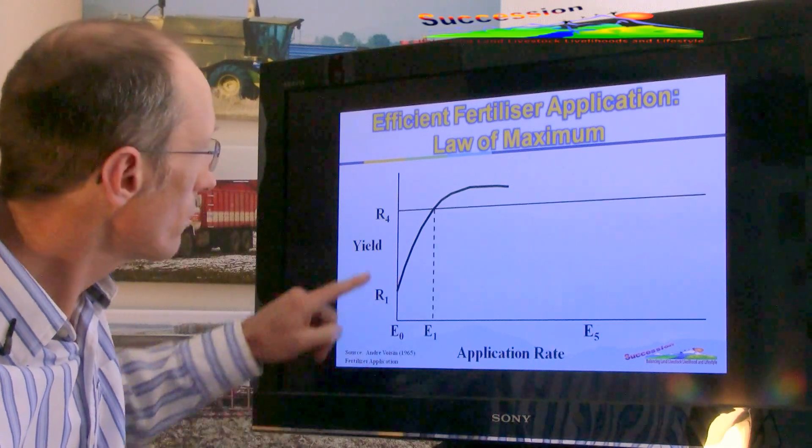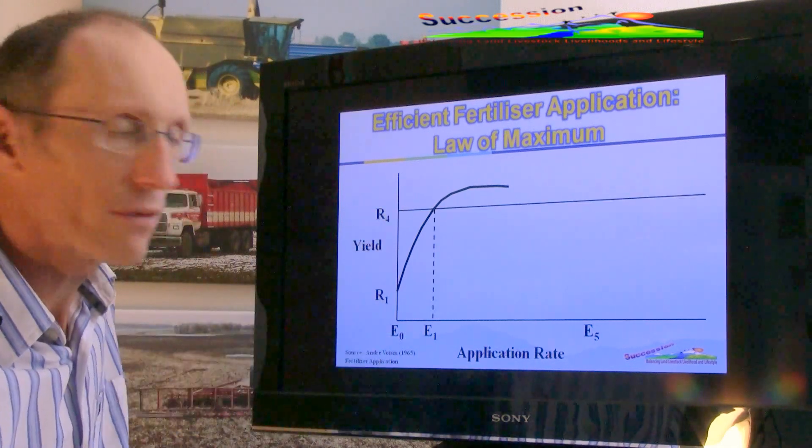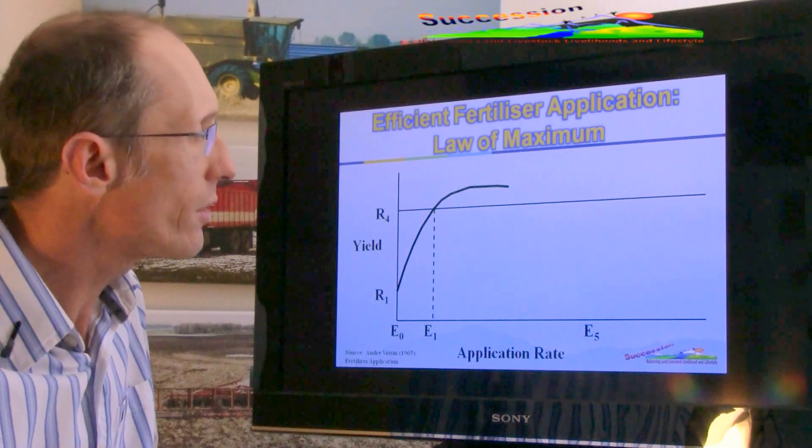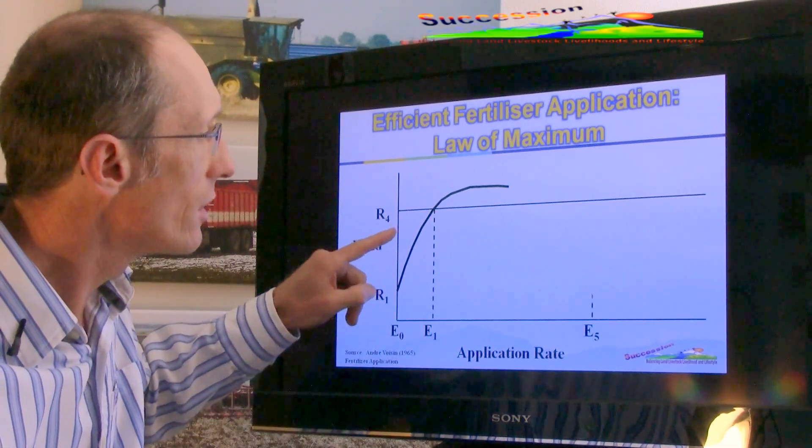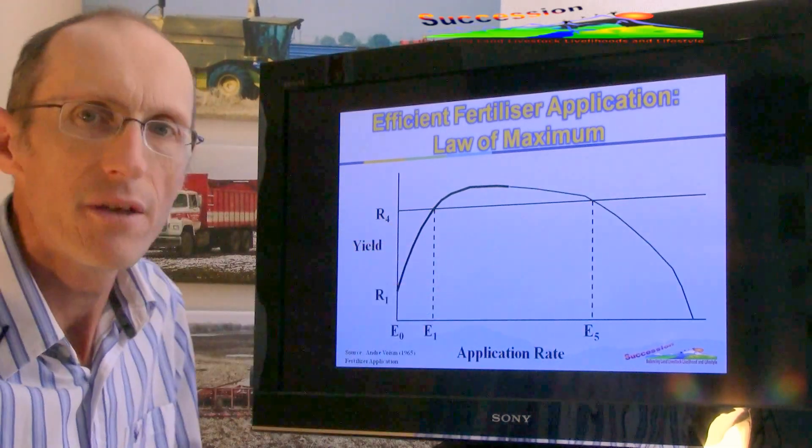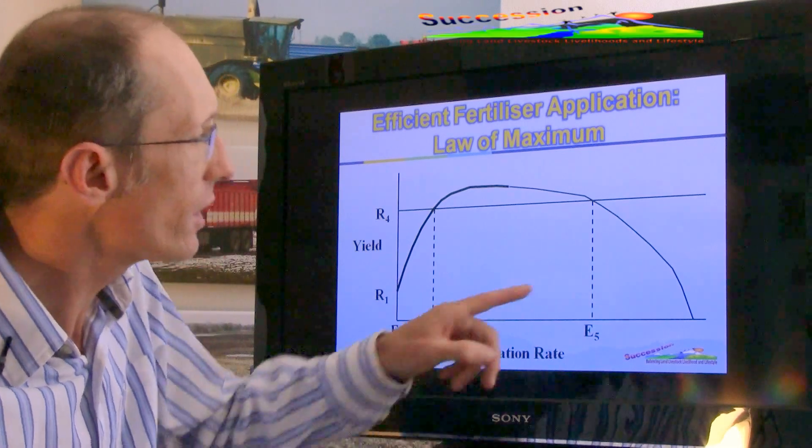But we can get 4 times that yield up here with a single rate of fertilizer. But what we seldom hear about is that you get that same yield with 5 times that single fertilizer rate, and even less if you add more.